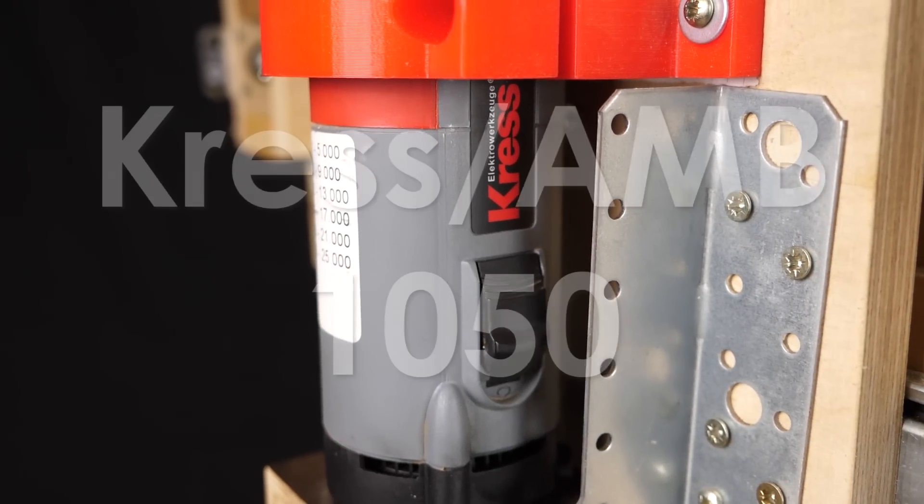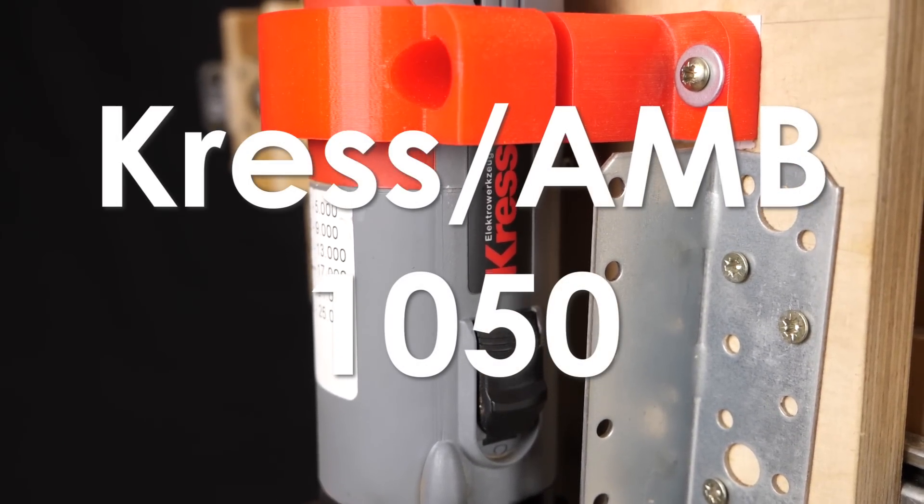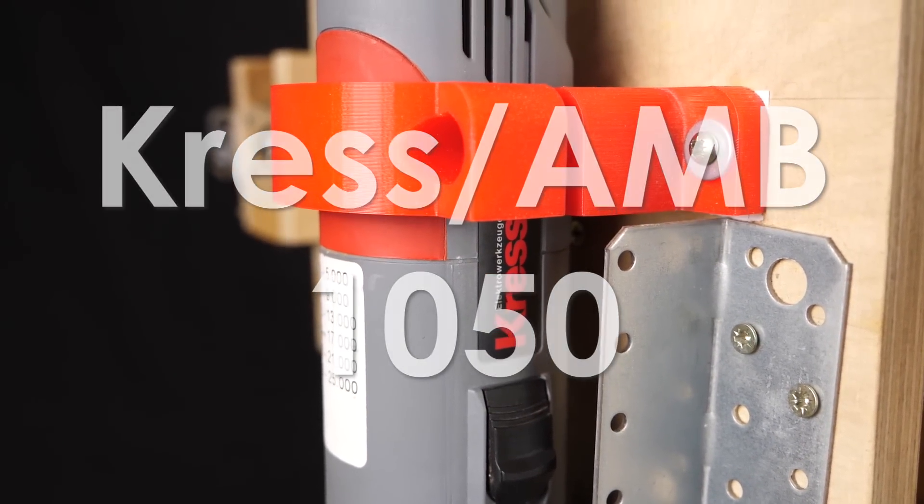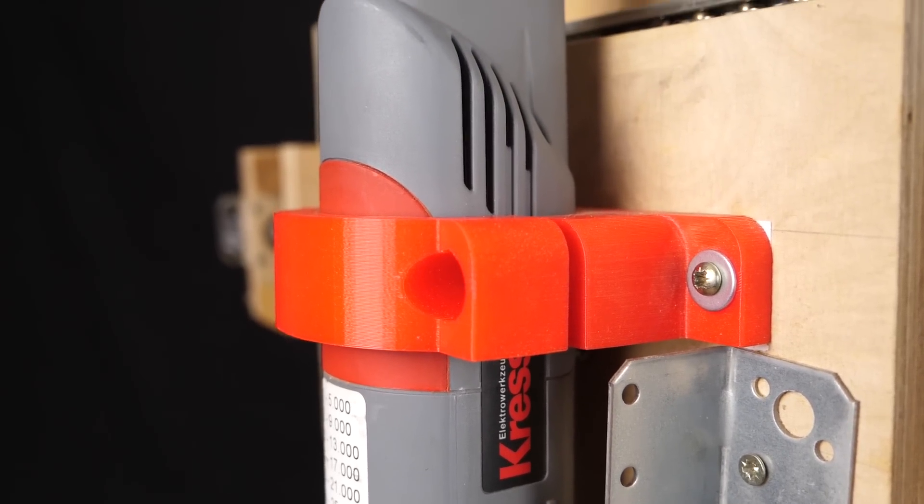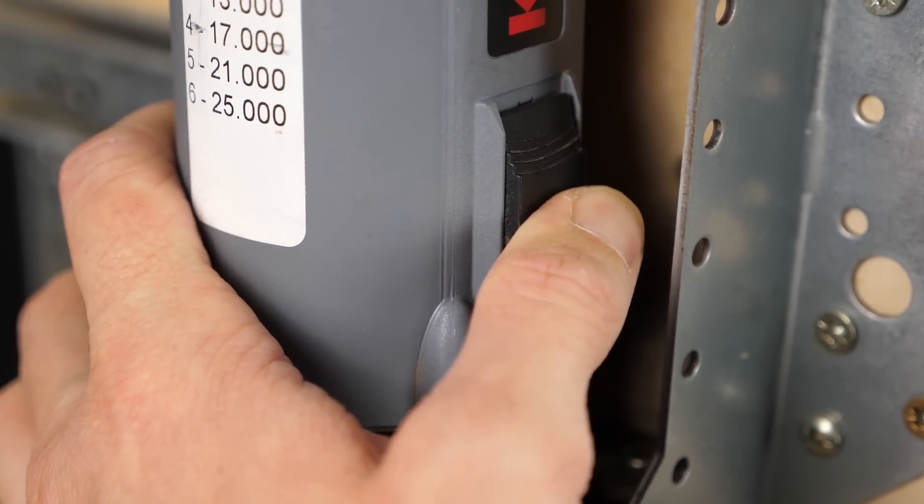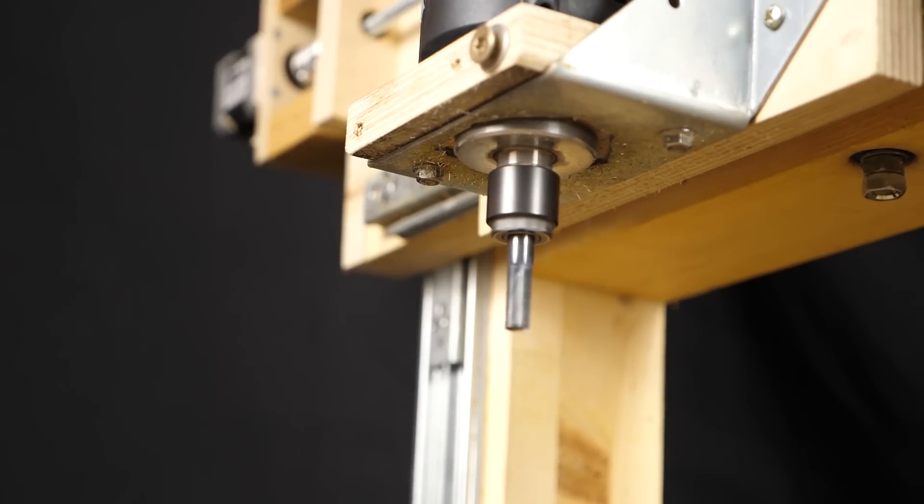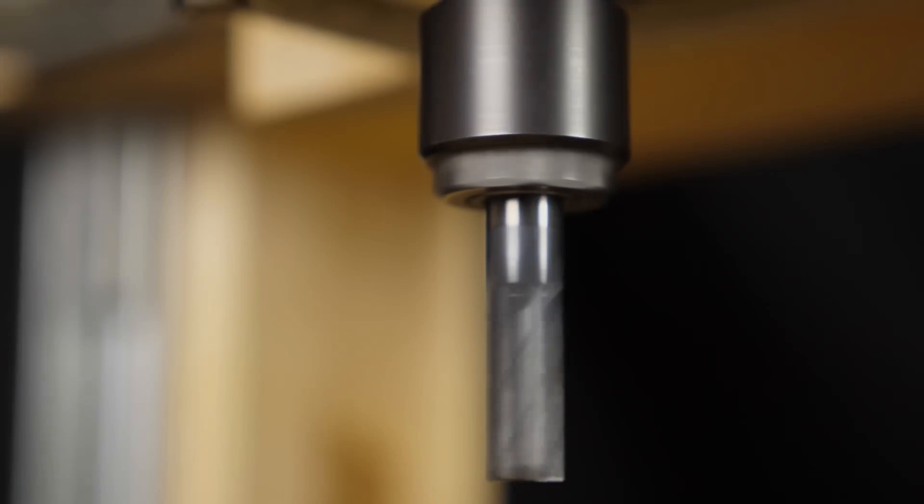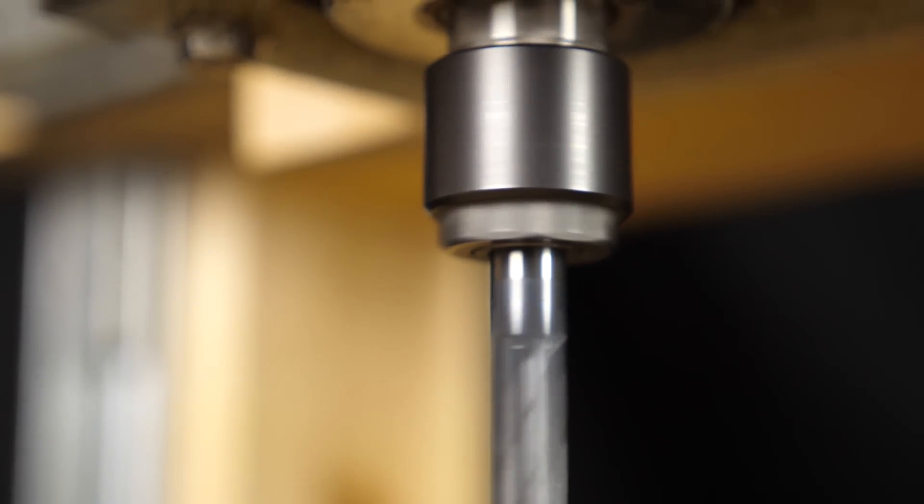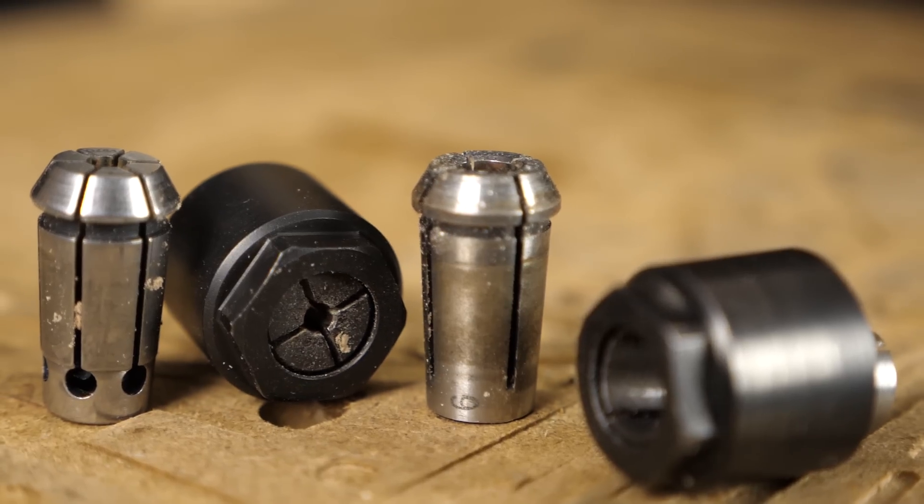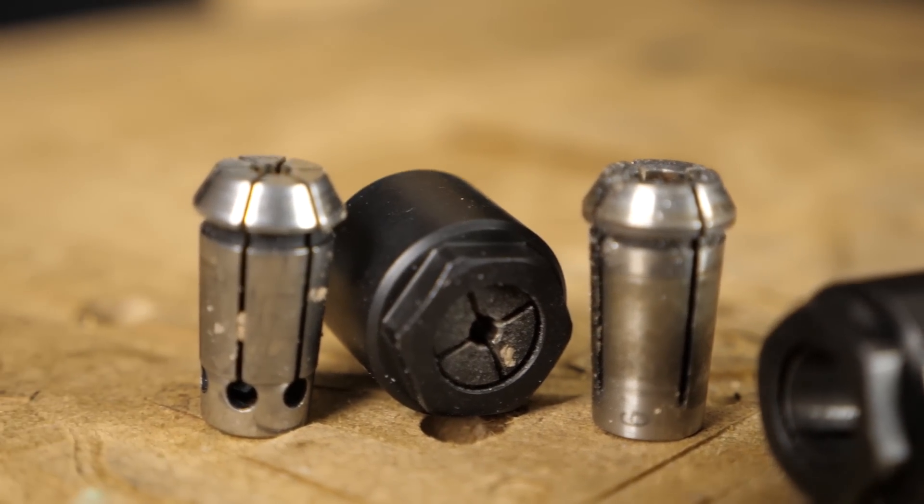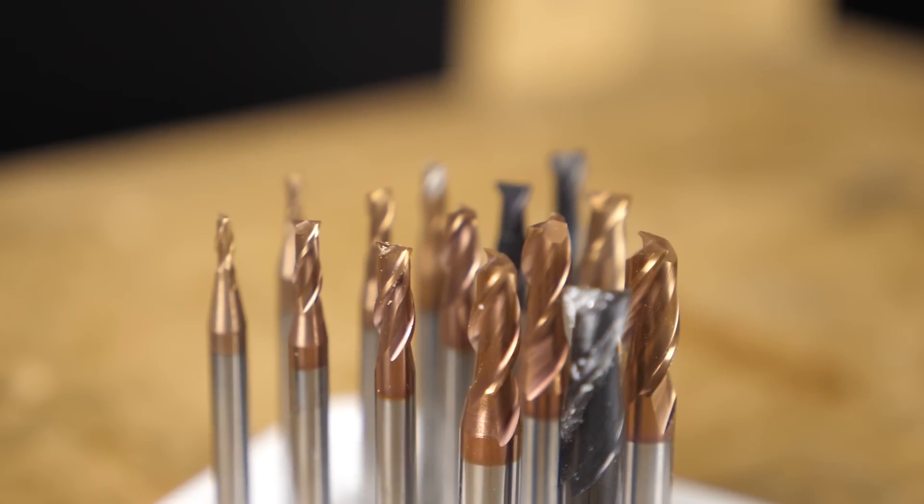I later bought a Kress or now AMB 1050 which is a 1050W air-cooled router that I still use now on my new CNC router. It's really loud but the RPM can vary between 5000 and 25000 which makes it usable for metals and wood. I could have also made myself another mount and used a normal shop router instead. The 1050 can use collets in different sizes up to 10mm which gives you a huge selection of tools.